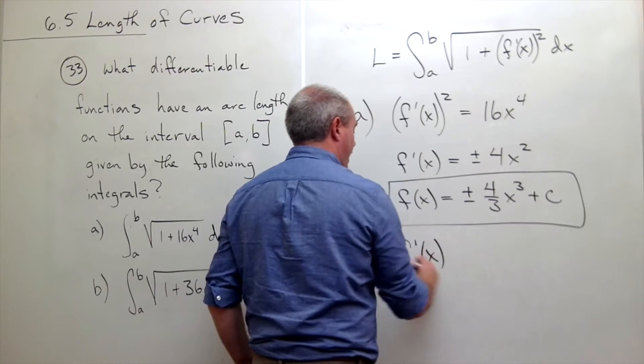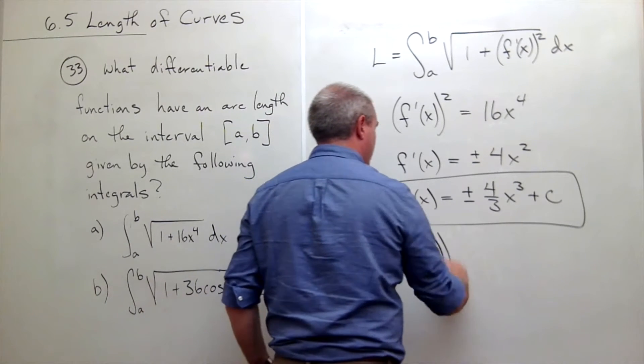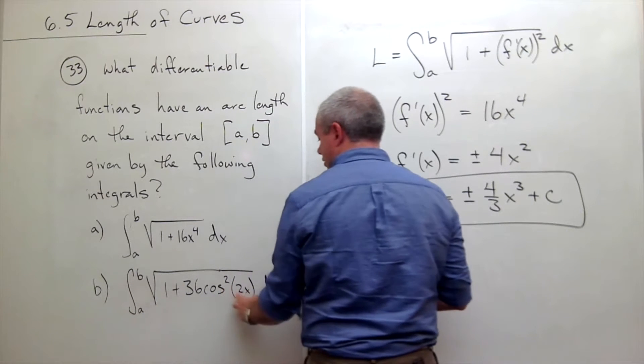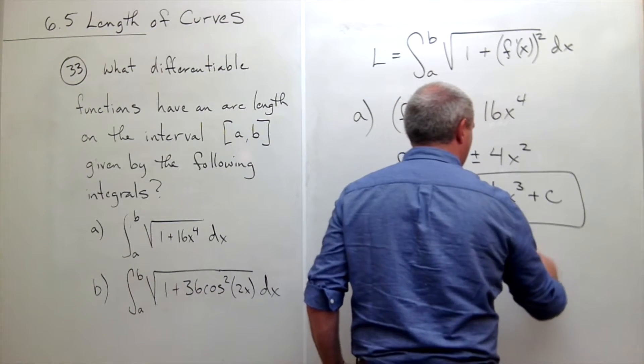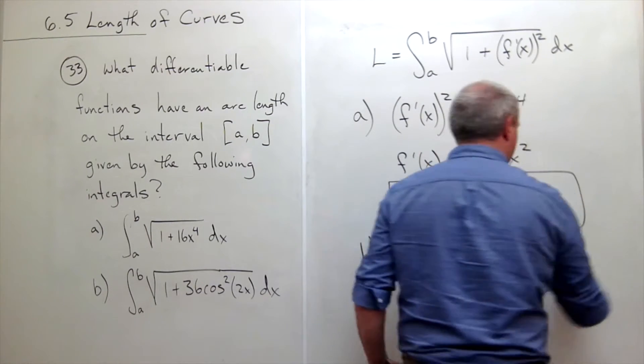So in this case, f prime of x squared is 36 cosine squared of 2x.